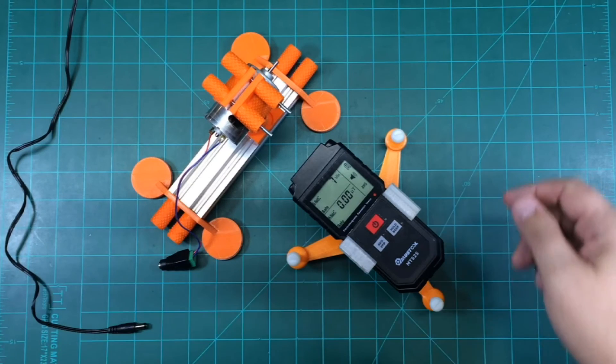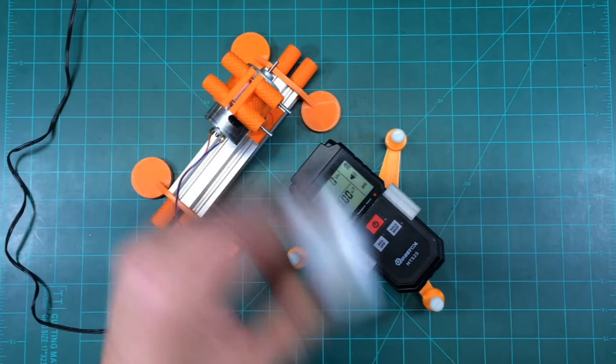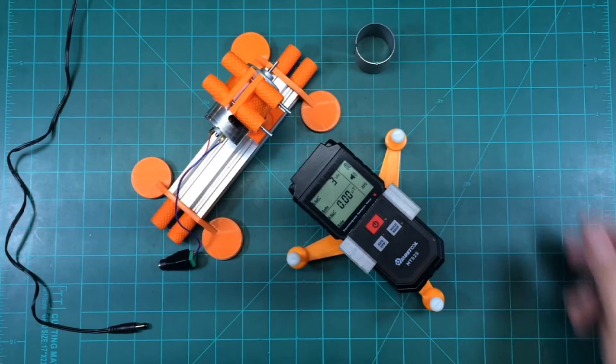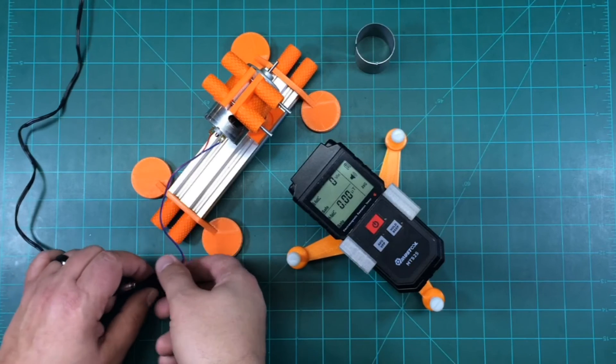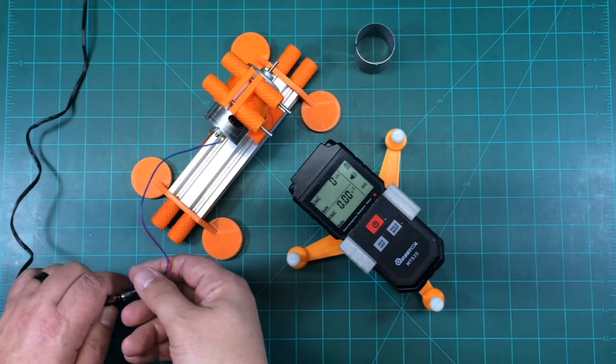All right, so now we're back. I've removed the flux ring from the motor. I'm going to set it right over here. I'm going to re-engage the power, and let's go ahead and watch the meter.